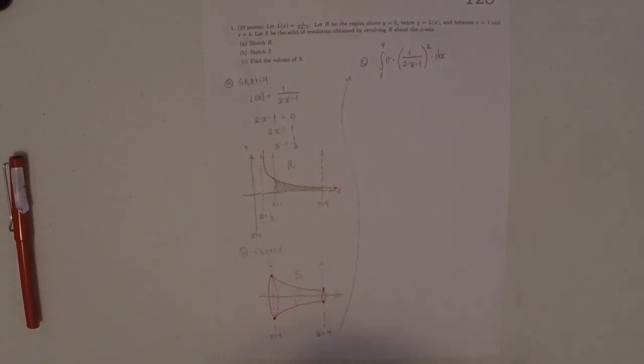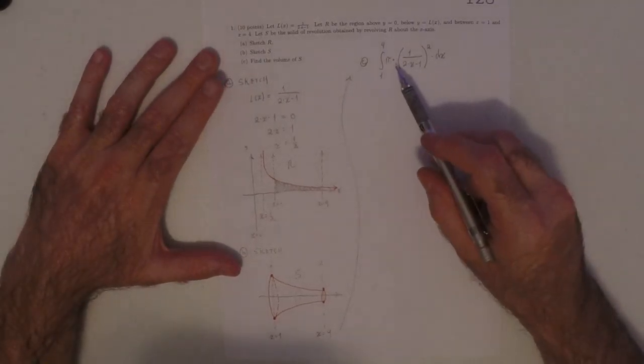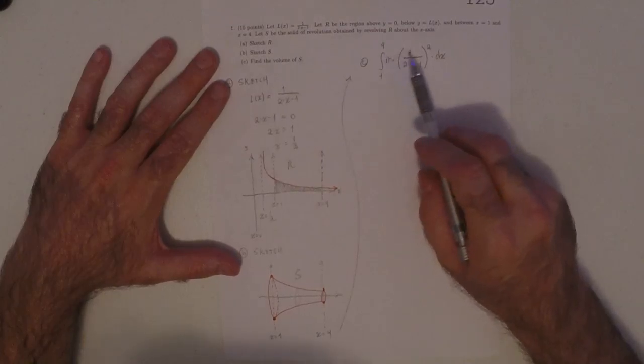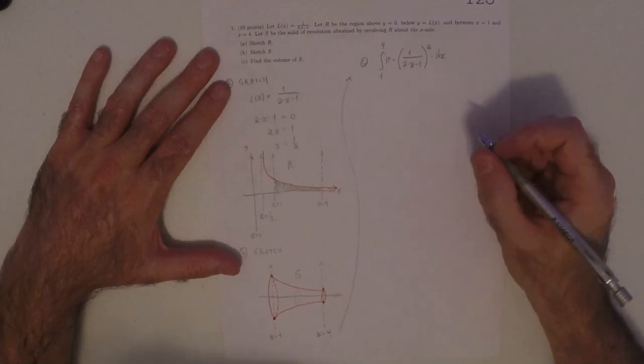Because remember, these solids of revolution are understood to be collections of infinitely many infinitesimal cylinders. So, the volume formula looks like add up pi r squared h.